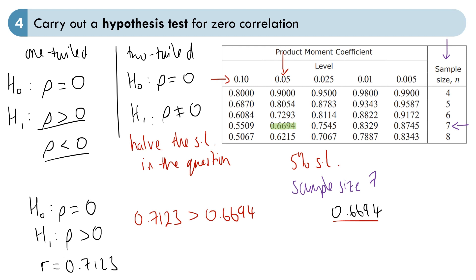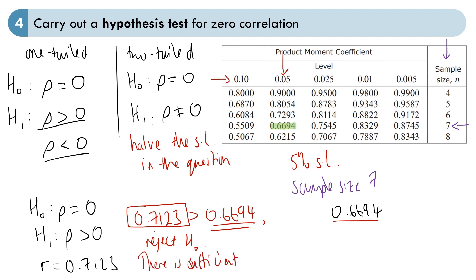So if you're testing for positive correlation with H0: rho equals 0 and H1: rho greater than 0, and the sample PMCC is 0.7123, we can see that 0.7123 is greater than 0.6694 — the critical value — so it's more extreme. There is enough evidence to reject H0, and we can conclude that there is sufficient evidence at the 5% level of positive correlation.